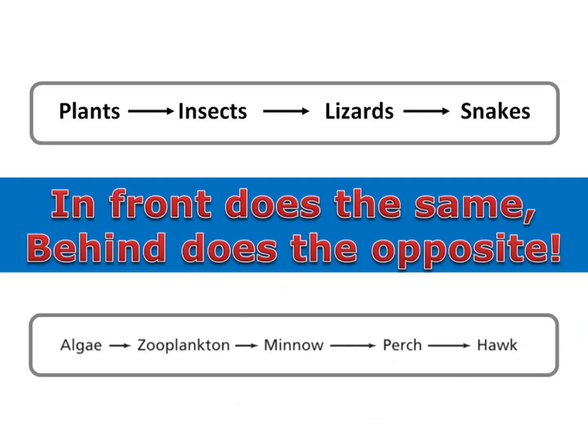It's very important that you can predict how changing one species in an ecosystem would affect the others. This phrase will help you remember how it works: in front does the same, behind does the opposite.